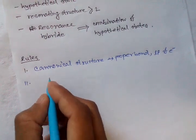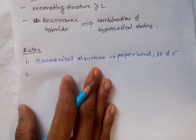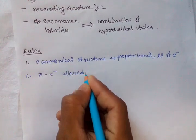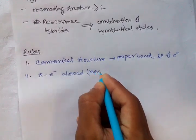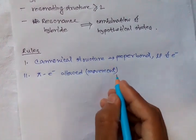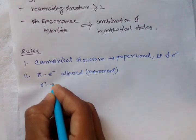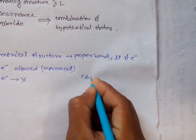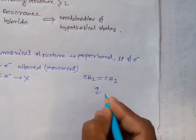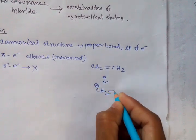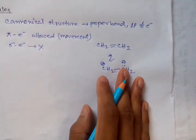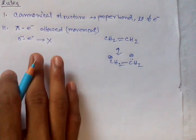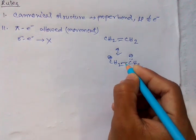Rule number two: the movement of pi electrons is allowed, but sigma electrons are not disturbed. For example, CH2=CH2 as a resonating structure giving CH2+ and CH2−. Only movement of pi electrons is allowed; sigma electrons are not.